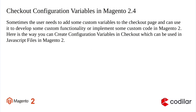Checkout configuration variables in Magento 2.4. Sometimes the user needs to add some custom variables to the checkout page and can use it to develop some custom functionality or implement some custom code in Magento 2. For example, for an unsuccessful payment in the checkout page, the user needs to redirect to a custom page. At that time we can create a checkout config which passes a redirect URL which can be called in JavaScript files.